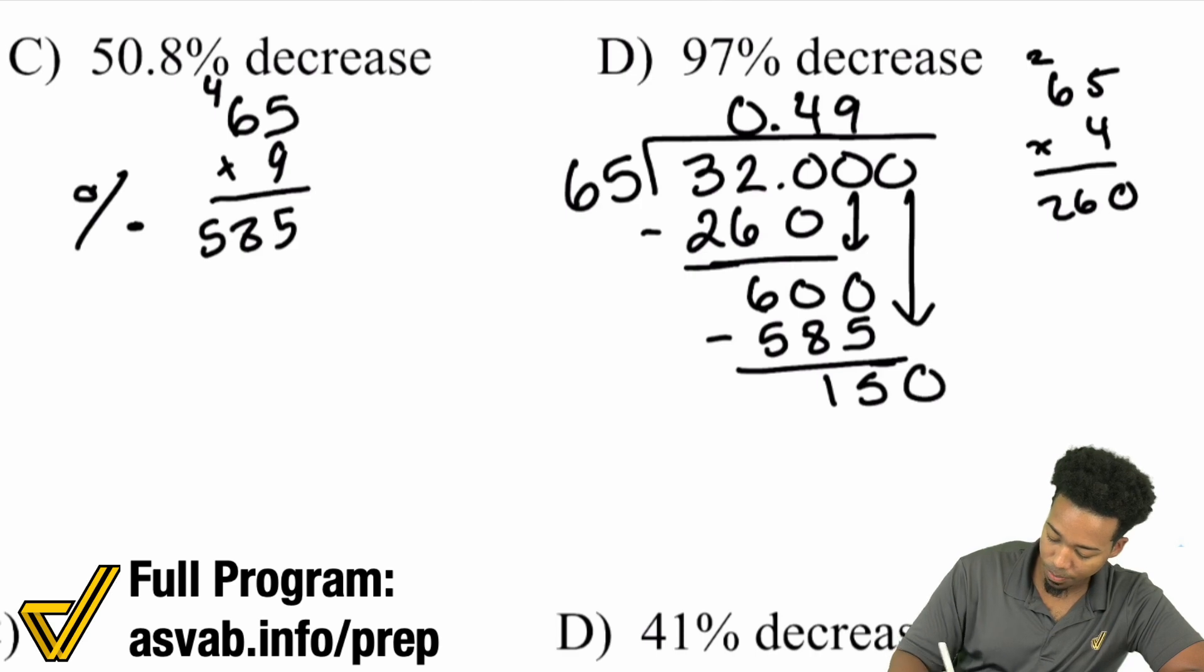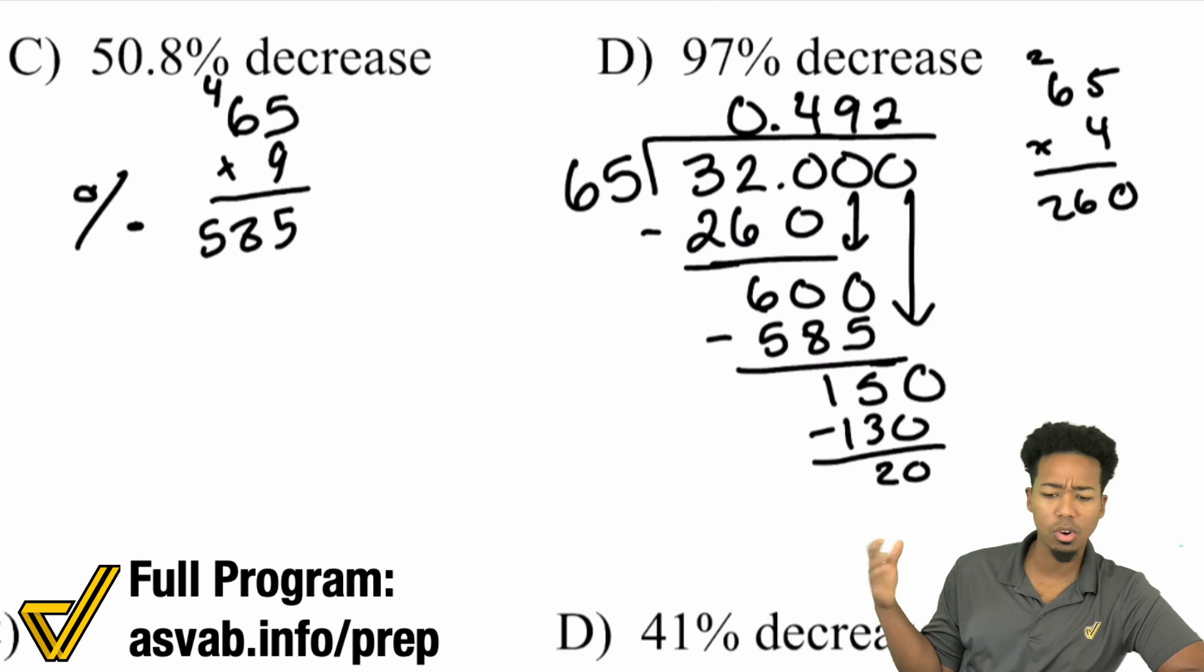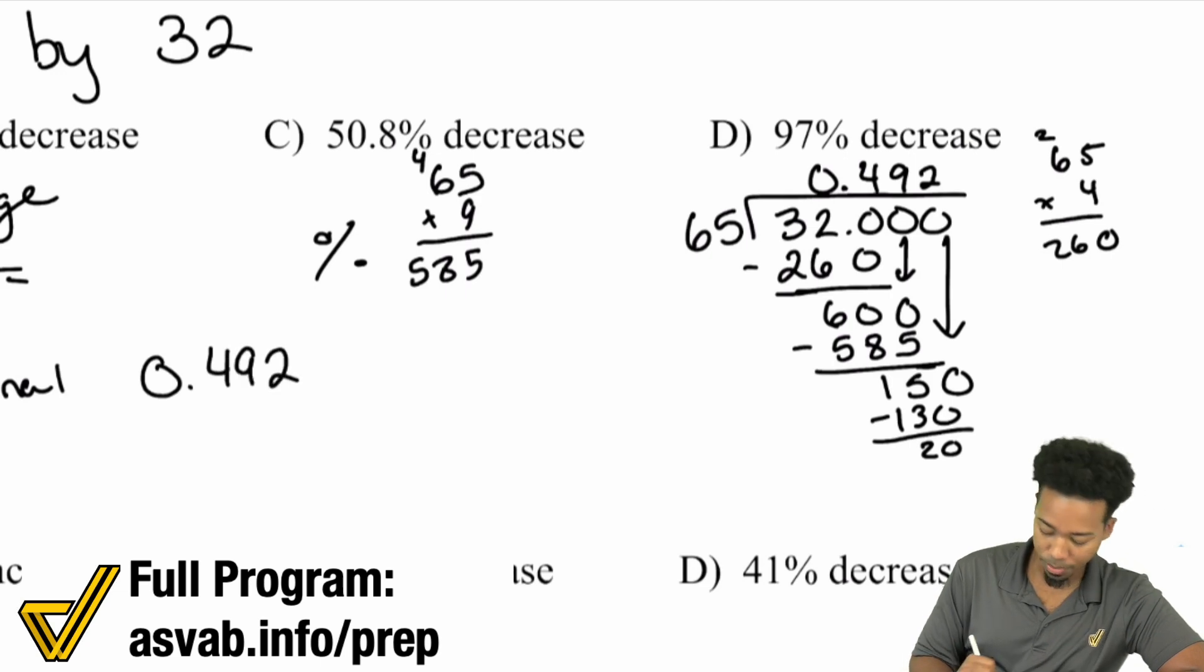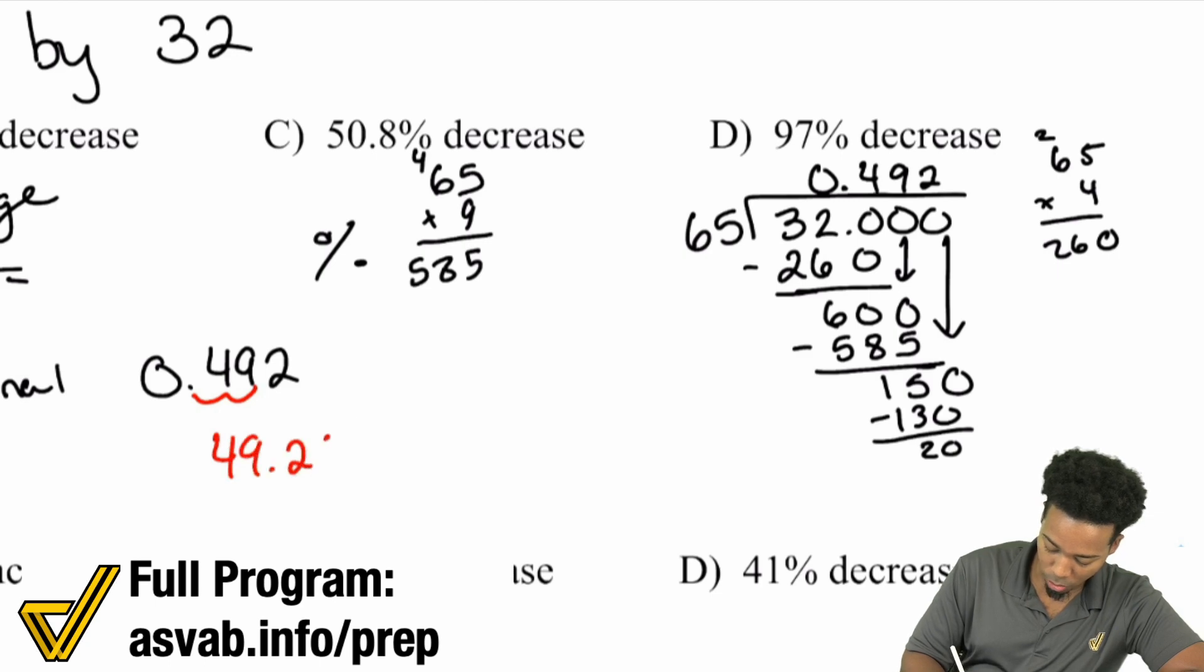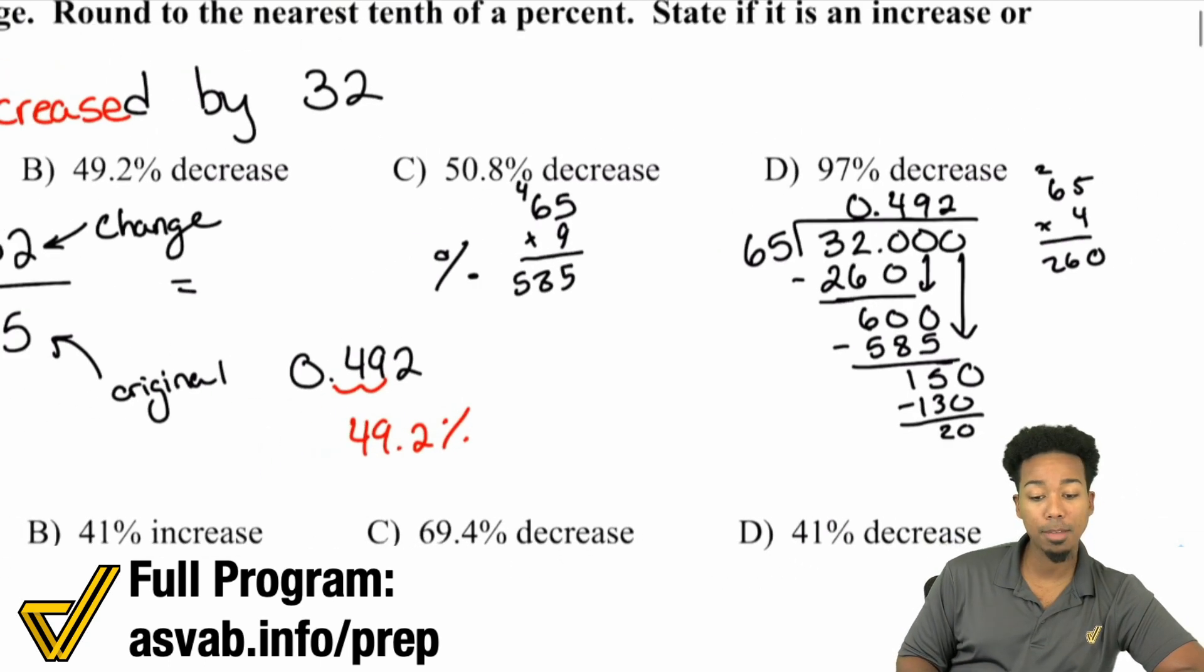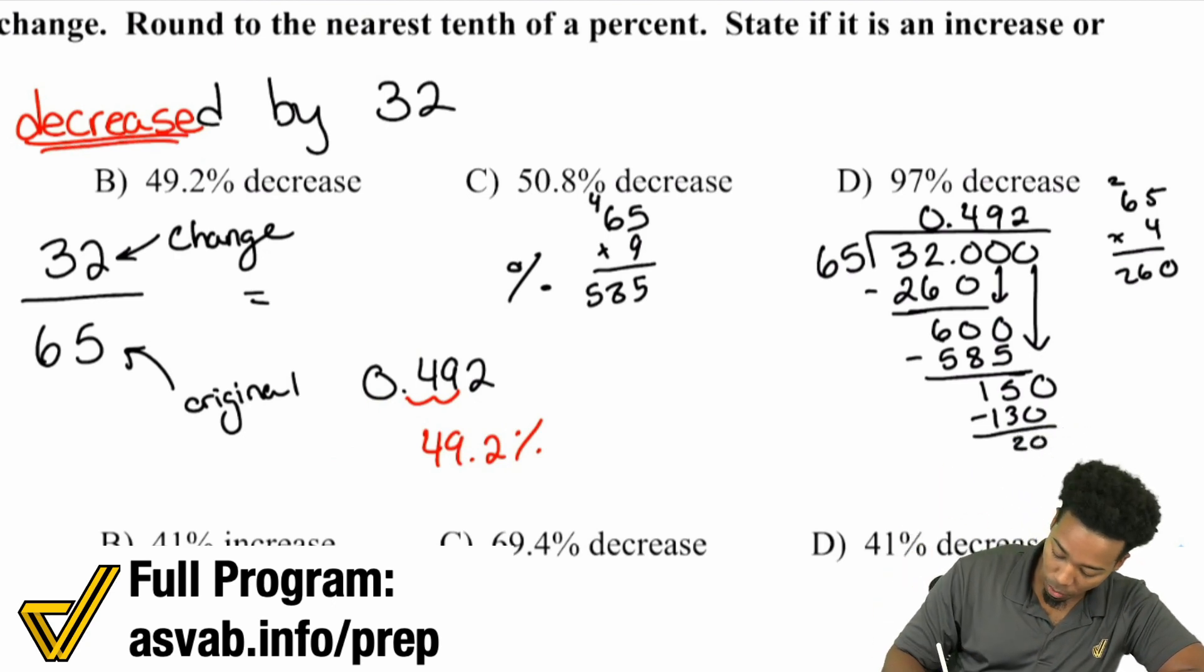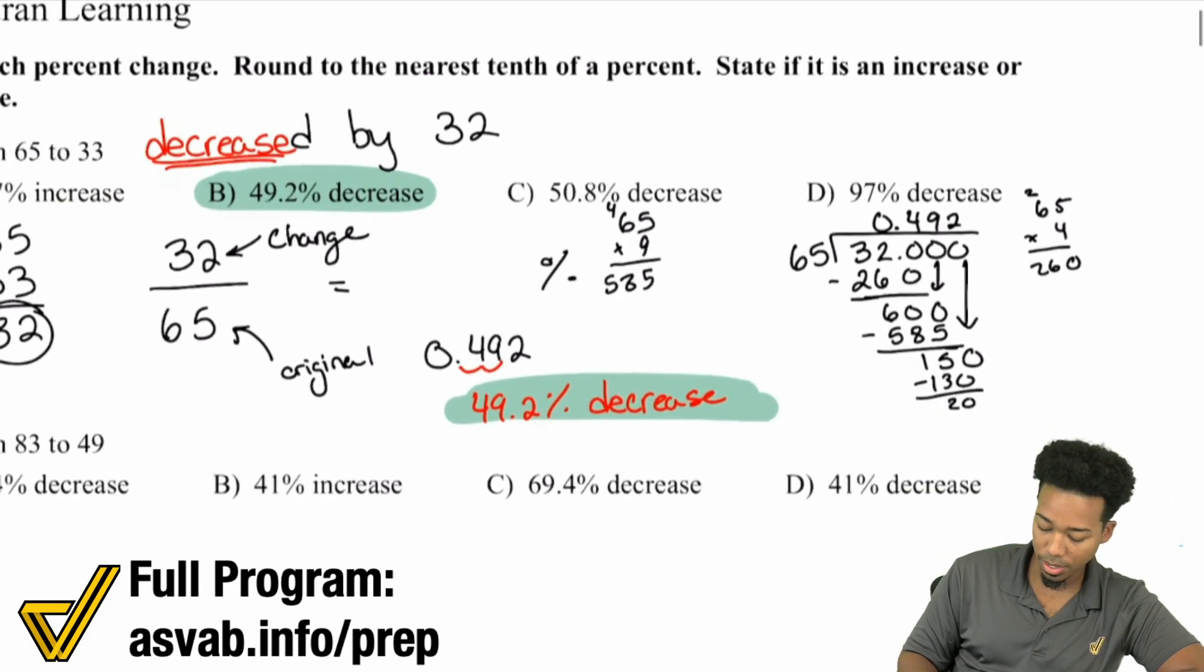Bring down the zero. 65 goes into 150 twice, minus 130, and you can keep going forever. What we got as a decimal was 0.492. As a percent, that's 49.2%. Remember, we said this was a decrease—we went down from 65 to 33. So it's a 49.2% decrease, and that's answer B.